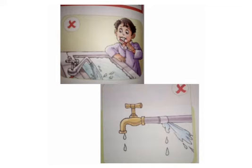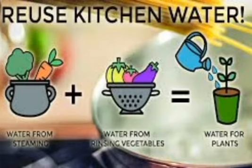We should not waste water. We should not let the tap run when we brush our teeth. We should not waste water while bathing or washing. We should get leaking taps or pipes fixed as soon as possible. We can also reuse water — for example, after washing vegetables and fruits, that water can be used to water plants.